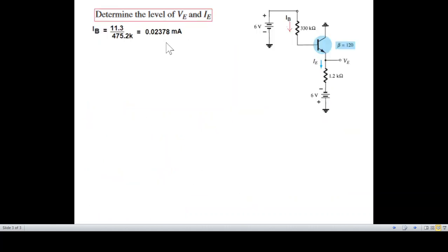So we found IB. Now we have to calculate IE which is using this formula beta plus 1. So beta is 121 and IB we have just calculated. Therefore IE is 2.877 milliampere.